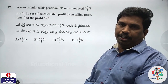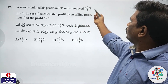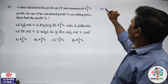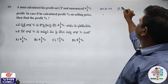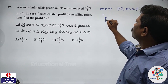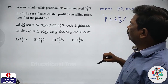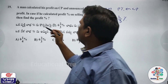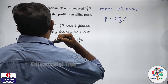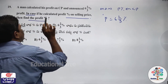Next, question number 19. A man calculates his profit percent on cost price and announces 6 and 2 by 3 percent profit. In case if we calculate the profit percent on selling price, what is the profit percentage?